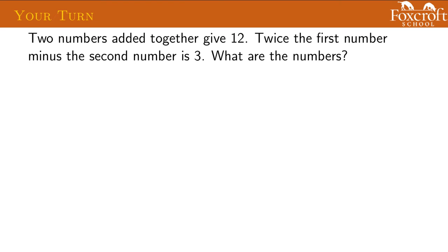Here's one that's your turn. Two numbers added together give 12. Twice the first number minus the second number is 3. What are the numbers? It's not really a real-world situation, it's just stuff about numbers, but figure out how you can make two equations that represent these two numbers.